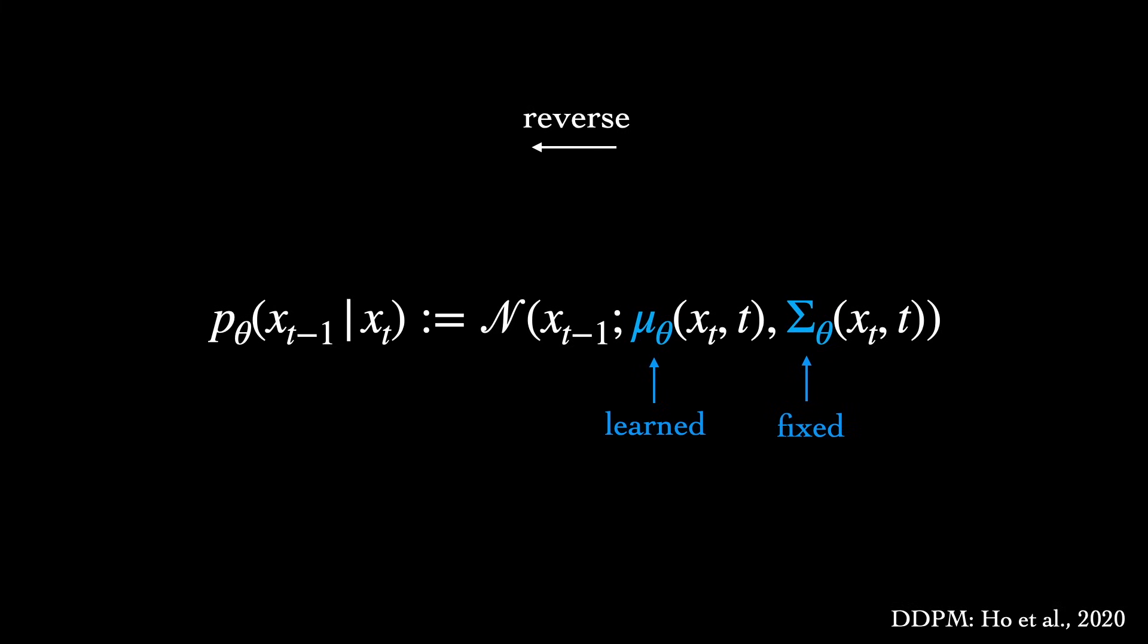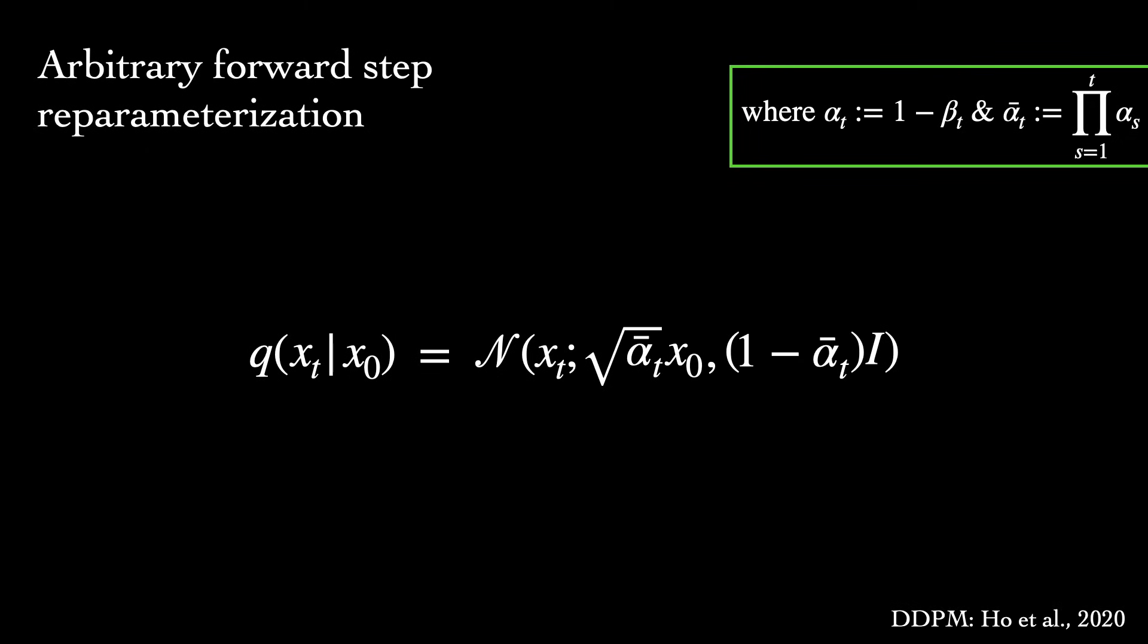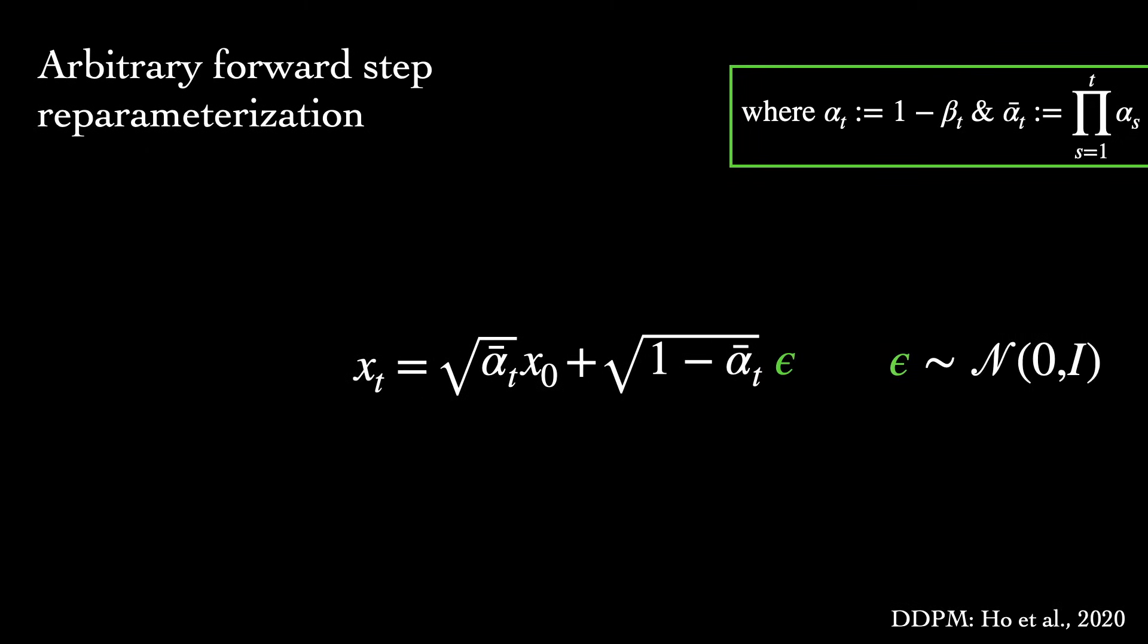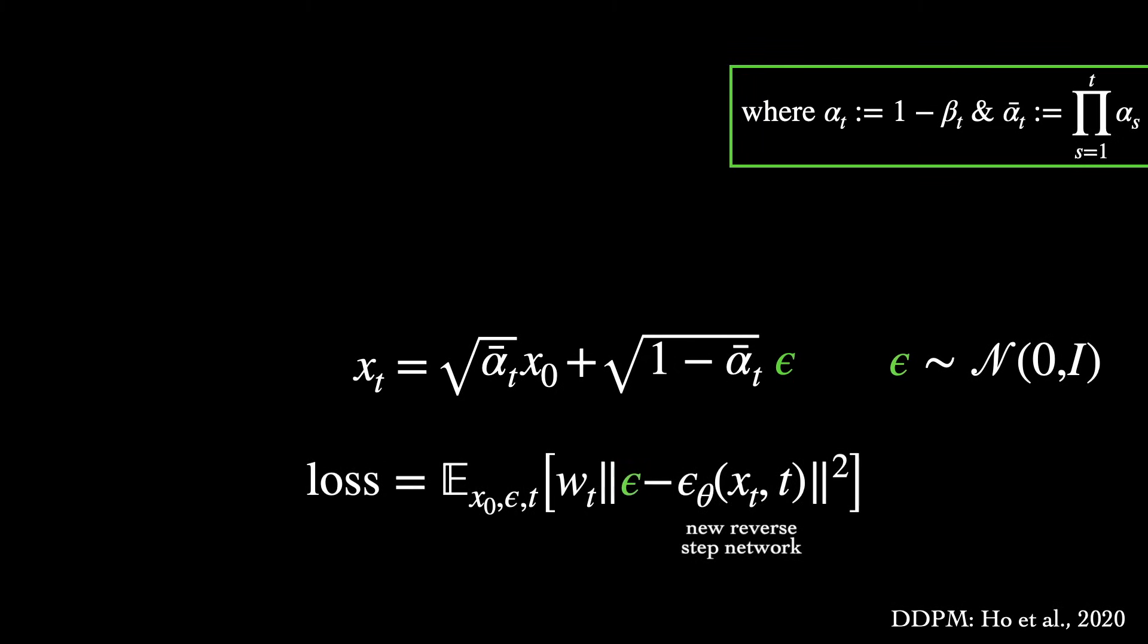First we can rewrite sampling from an arbitrary forward step by using an auxiliary noise variable, epsilon. Epsilon here has a constant distribution, independent of the forward time step t, and the reverse step model can be designed to simply predict this epsilon.